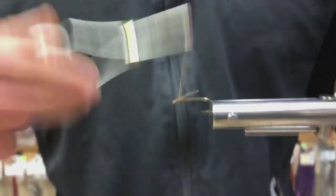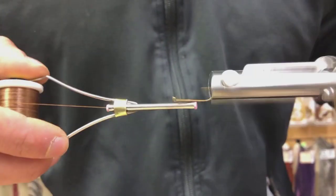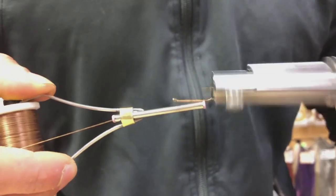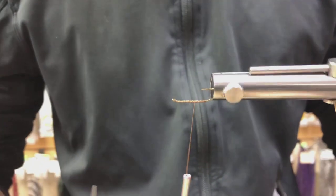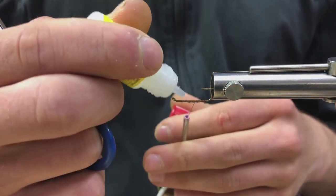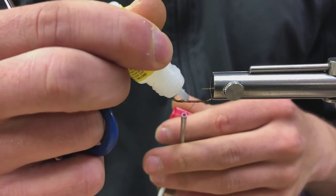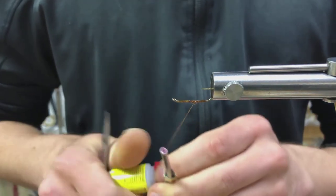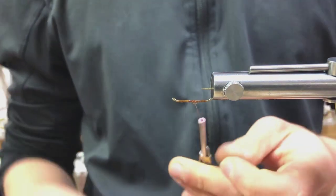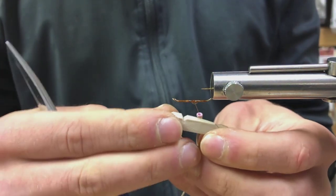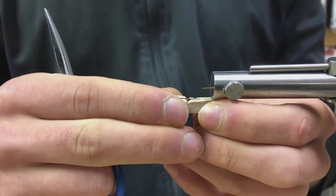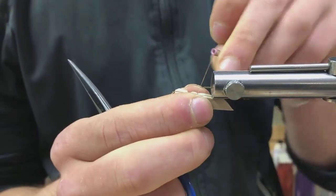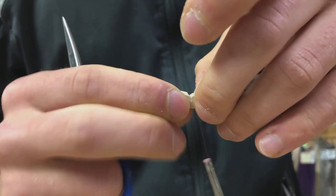So, you're ready to start the thread here. This is a 140 denier UTC in brown. You want to lay down a good base so that foam can attach. And then just take some super glue and lay that down that thread shank and just press the slit on the body to expose the slit there, get all the glue in there.